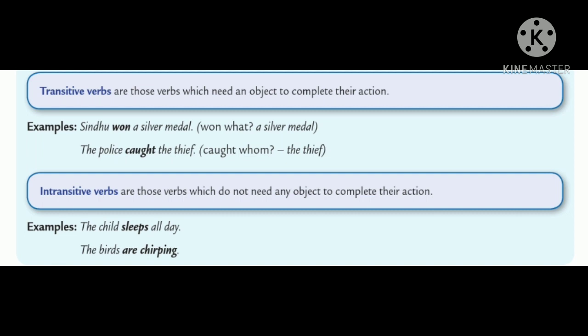Intransitive verbs are those verbs which do not need any object to complete their action. Examples: the child sleeps all day. The birds are chirping. In the first sentence, the verb is sleeps. In the second sentence, the verb is are chirping. But they do not need any object.